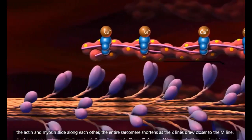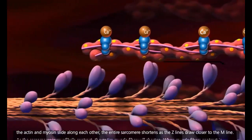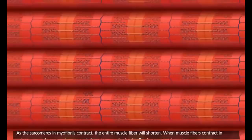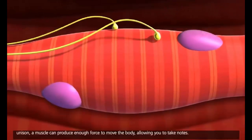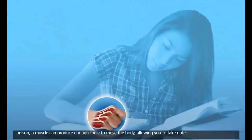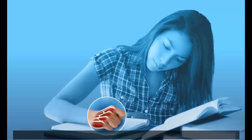As the actin and myosin slide along each other, the entire sarcomere shortens, as the Z lines draw closer to the M line. As the sarcomeres in myofibrils contract, the entire muscle fiber will shorten. When muscle fibers contract in unison, a muscle can produce enough force to move the body, allowing you to take notes.